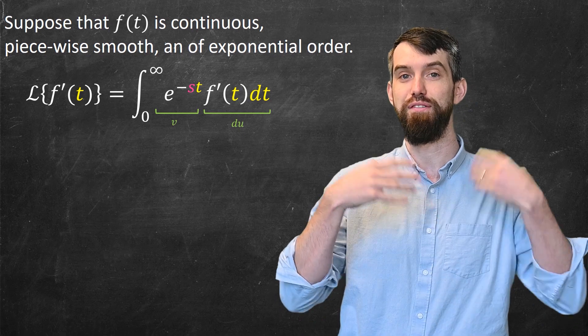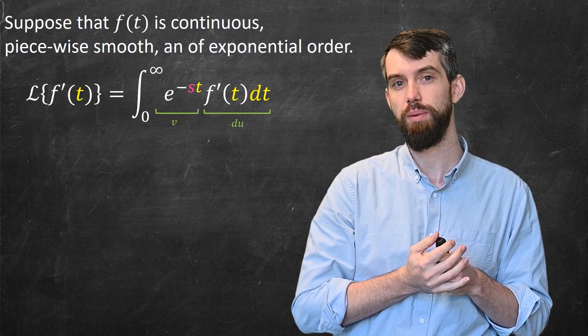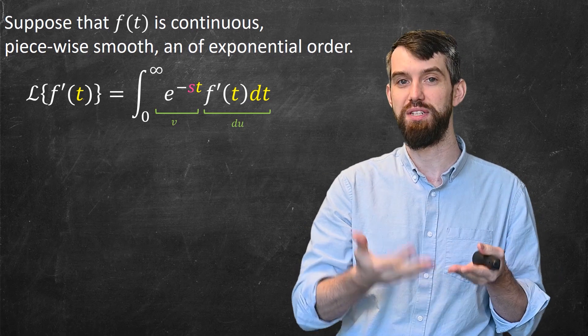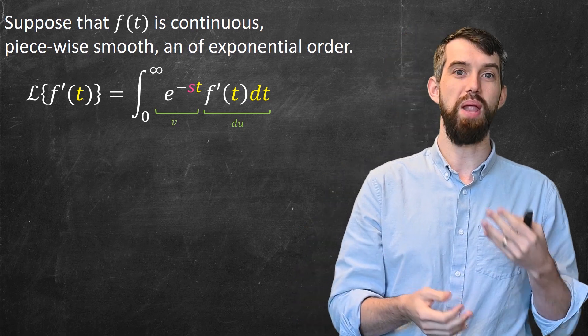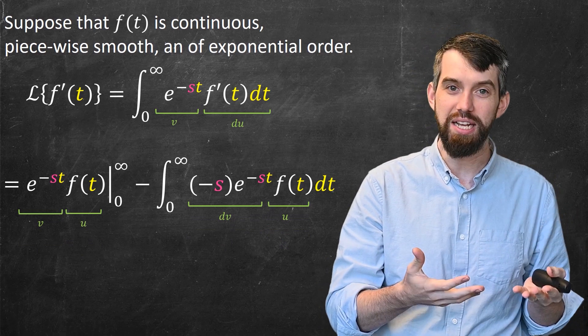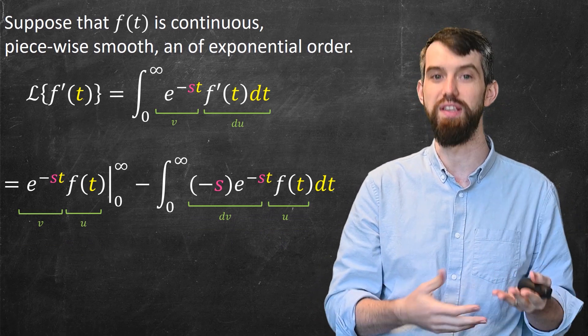I'm going to observe that I have a v, which is my negative exponential, and then I have a du, which is going to be my f'(t)dt. Then applying the integration by parts formula, I write it out as uv minus then the integral of v du.